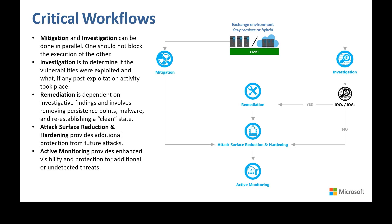Once you implement a mitigation, an investigation is still required, since if the attacker has already exploited the vulnerability, you have to assume they established some persistence on the machine. Even after doing a thorough investigation or remediation, there is a possibility that the attacker may still have presence. You still need to assume breach and place as many barriers to an attacker going undetected in your environment as possible.